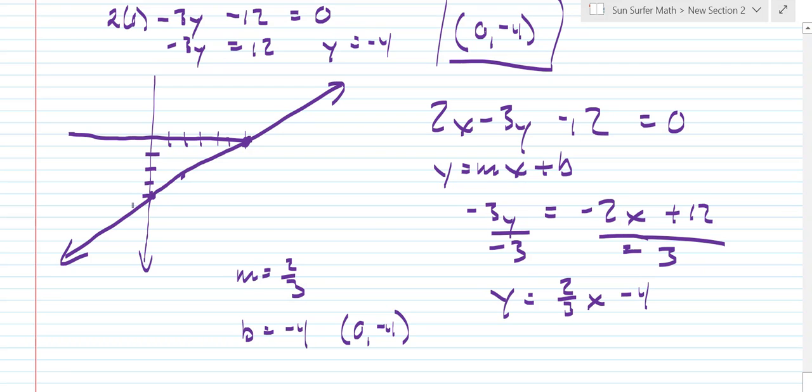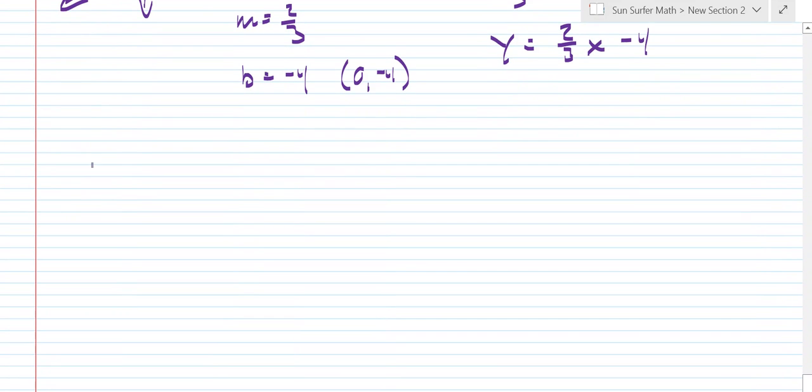We already know that from this graph right here. 0, negative 4. So what we want to do to graph it using this particular method is start at the y intercept. So again, draw our axes. And my y intercept is 0, negative 4. And then use the slope to find another point.